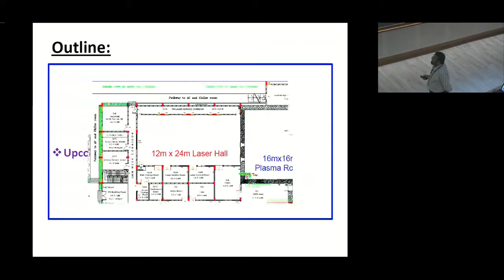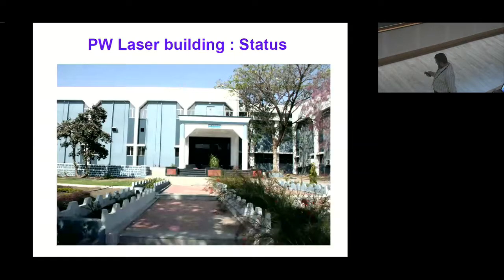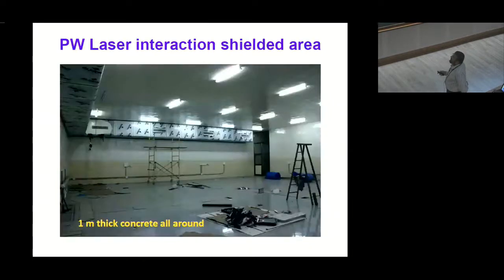Now coming to petawatt facility, this is a building layout. We got huge big hall for housing the petawatt laser which is about 12 meters by 24 meters and this service corridor will house all major power supplies of the laser system and then there is huge interaction area, you can see this thick area which is shown here, it is 1 meter thick concrete to confine the radiation which are emitting during the experiments and this is again 16 by 16 meter big hall for performance of experiments. So this is a building view that the building is ready and this is a laser hall which is almost at the final finishing touch and then this interaction area which is one meter thick concrete all around and this is also very huge, 16 by 16 meters.